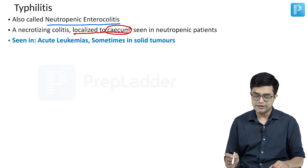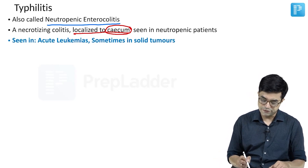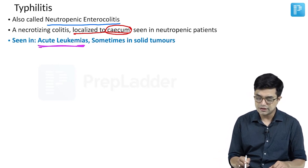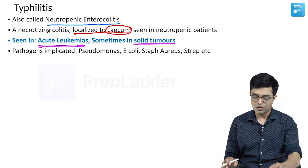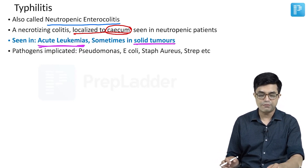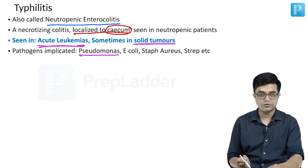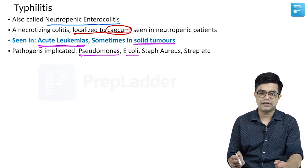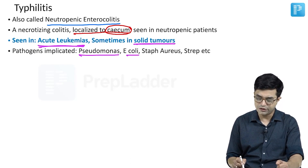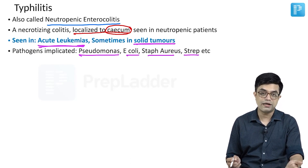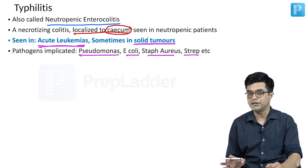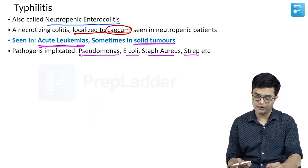What are the conditions where Tiflitis is seen? It is very frequently seen in acute leukemias, and sometimes can occur in solid tumours as well. What are the pathogens implicated? Pseudomonas is a frequent pathogen. E. coli along with other gram-negative bacteria can also be seen. Then you have Staph aureus, alpha hemolytic streptococci, and beta hemolytic streptococci also being present in some patients.